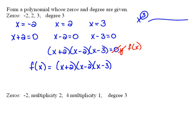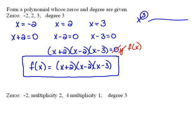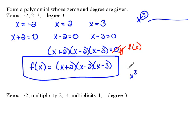This function has those x-intercepts. If I were to multiply this all out, I would in fact have x-cubed as my highest power of x, because x times x times x equals x-cubed. So that double-checks itself.